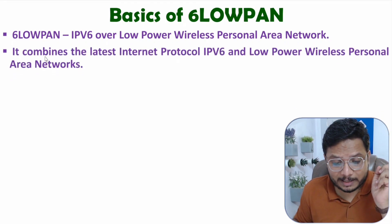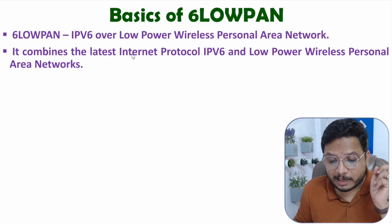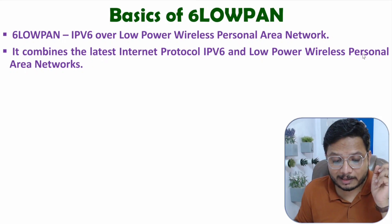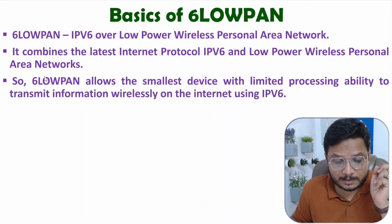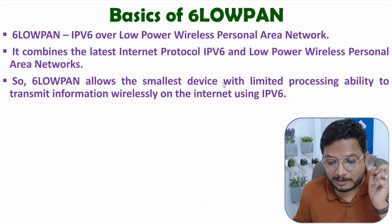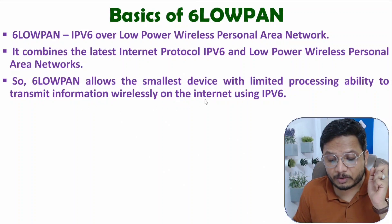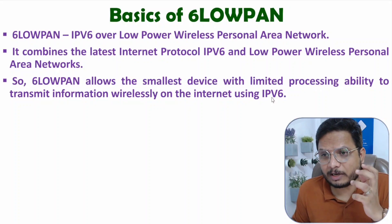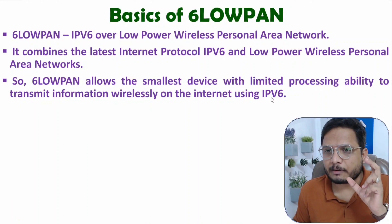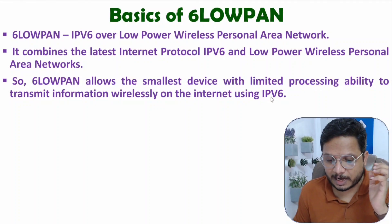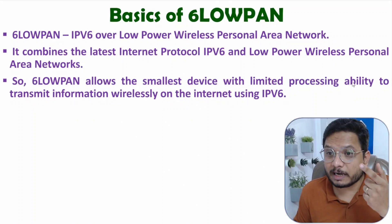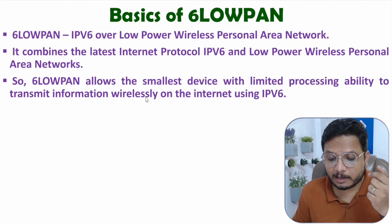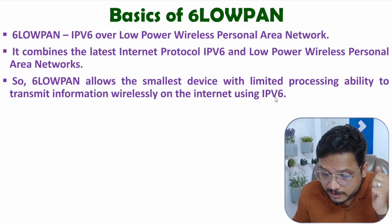6LoWPAN combines the latest internet protocol IPv6 with low-power wireless personal area networks. It allows the smallest devices with limited processing ability to transmit information wirelessly on the internet using IPv6 protocol. IoT devices have limited processing ability — like embedded systems — and they transmit information wirelessly using IPv6.